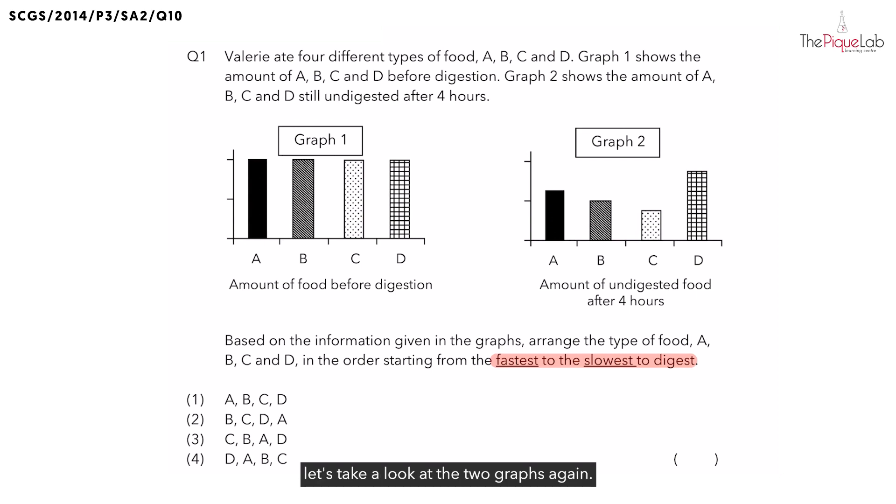So to answer this, let's take a look at the two graphs again. At first, we started off with the same amount of food A, B, C, and D. Now, after 4 hours, what do you realize happens to the amount of undigested food? You can see that the amount of undigested food decreases. Why do you think the amount of undigested food would decrease? The question already told you it's because digestion had taken place.